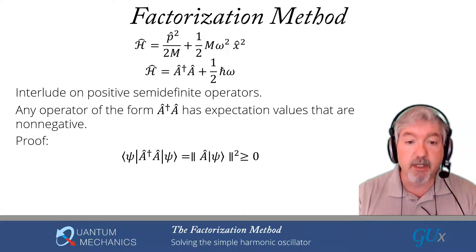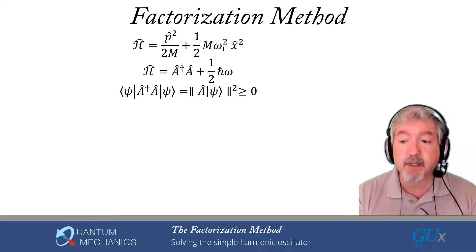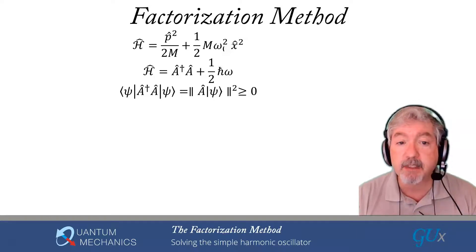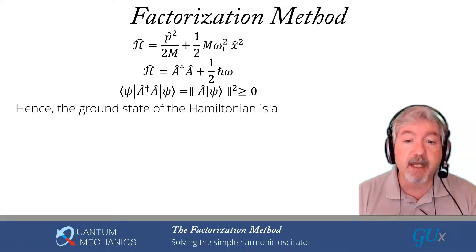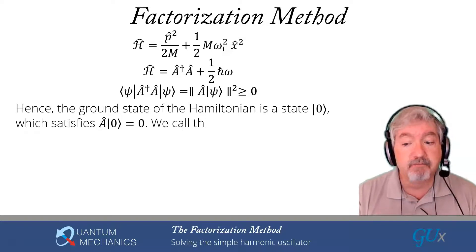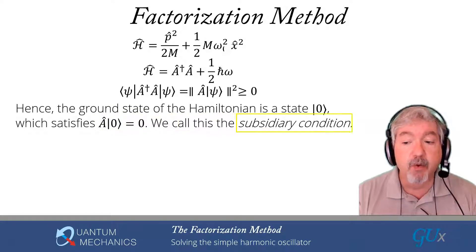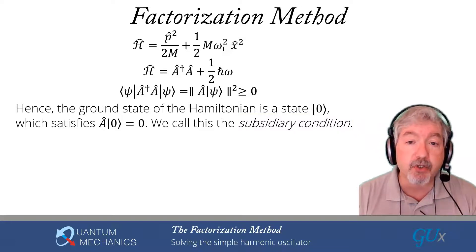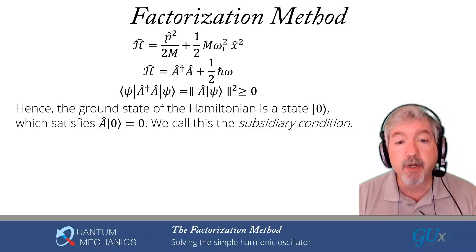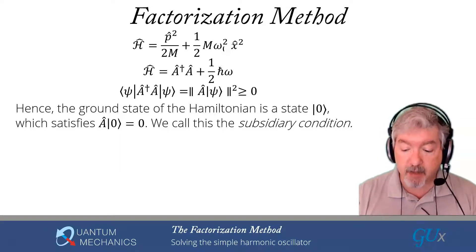Now we want to find the ground state of the Hamiltonian. When I'm in the ground state, when I take the expectation value of the Hamiltonian, I will find the smallest value that I could possibly have. Since the operator a†a is positive semi-definite, the smallest value it could possibly have would be zero. So if I can find a state in which the expectation value of that positive semi-definite operator is zero, then I've found the ground state. It would correspond to a state where A acting on that state is equal to zero — we call that condition the subsidiary condition. I want to point out that that is a condition where an operator has annihilated a state. Every time we can find a situation where an operator annihilates a state, there are lots of good things to come.